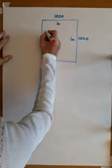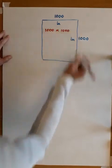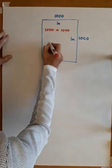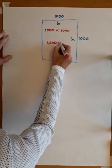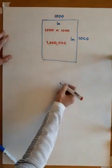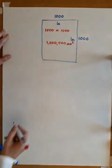Well, it's a thousand times a thousand, which equals a million. So that is one million square millimeters.